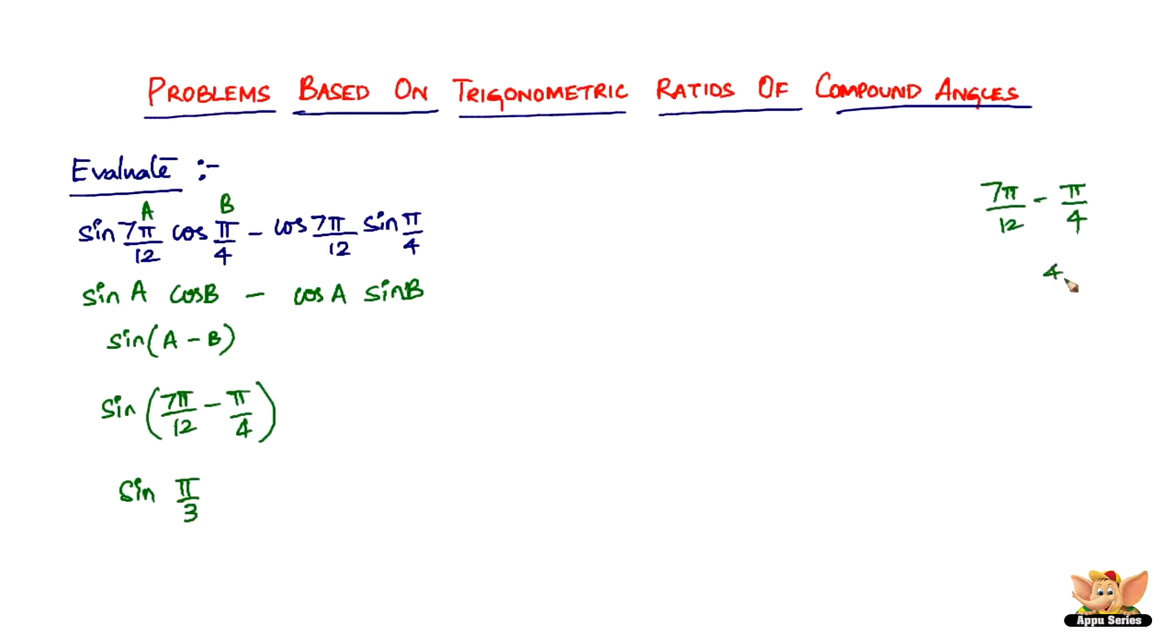The LCM of 4 and 12 is definitely 12. 4 times 3, the LCM is 12, so divided by 12 into 1 gives you 12, so 7π into 3, gives you 12, so minus 3π. So 7π minus 3π is 4π divided by 12 is π by 3.